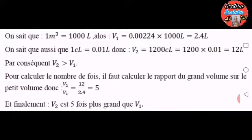On sait aussi que 1 centilitre égale 0,01 litre. Donc, V2 égale 1200 centilitres égale 1200 fois 0,01 égale 12 litres. Par conséquent, V2 est plus grand que V1. Pour calculer le nombre de fois, il faut calculer le rapport du grand volume sur le petit volume. Donc, V2 sur V1 égale 12 sur 2,4 égale 5. V2 est 5 fois plus grand que V1.